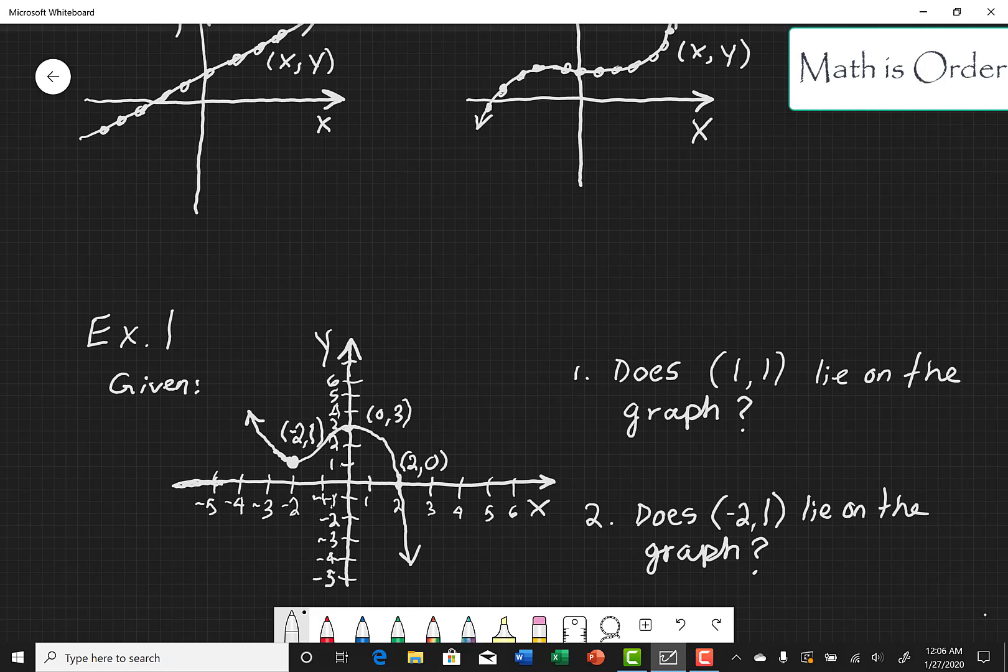So let's tell if (1,1) lies on the graph. (1,1) is located right about here and we can see clearly that (1,1) does not lie on the graph. In order for a point to lie on the graph, the point must touch or go through the graph.